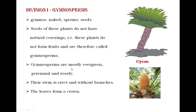Gymnosperms are mostly evergreen, perennial, and woody plants. Evergreen means throughout the year these plants are green in color. Perennial means the plant completes its life cycle in more than two years. Gymnosperms require more than two years to complete their life cycle, and they are also woody plants.